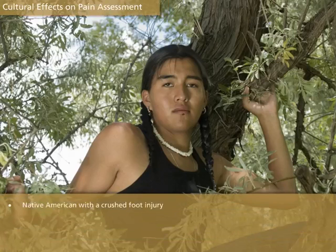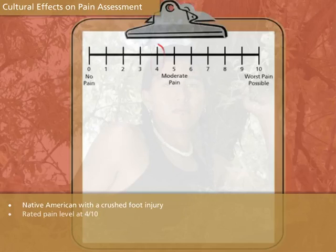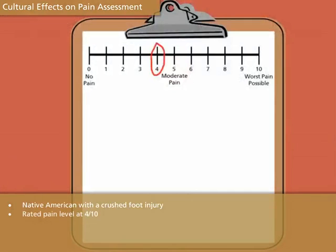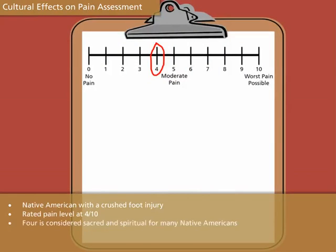Let's consider a Native American patient who had just suffered a crushed foot injury and rated his pain level at a 4 out of 10 on a numerical scale. Unless you understand that the number 4 is the sacred and spiritual number for many Native Americans, you may not be aware that this rating did not accurately reflect this patient's pain severity.